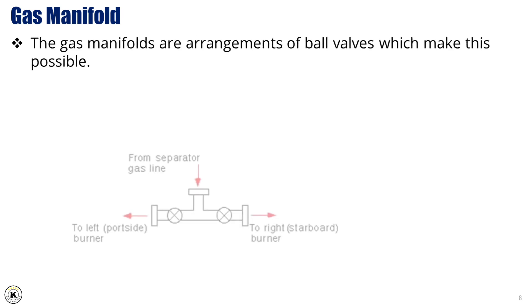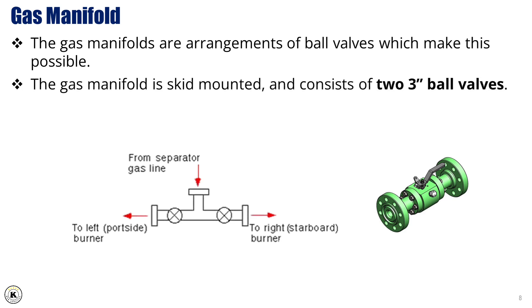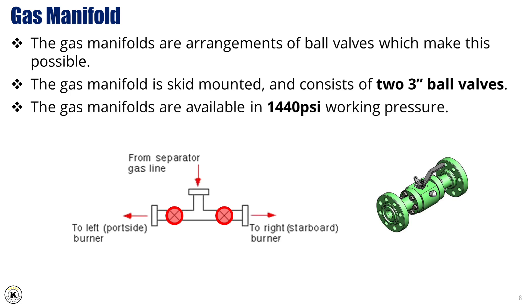The gas manifolds are arrangements of ball valves that make the diversion of gas flow possible. Each gas manifold is skid mounted for easy transportation and stability during operations, and consists of two three-inch ball valves. These manifolds are specifically designed to handle low pressure conditions downstream of the choke manifold, and are available with a working pressure rating of 1,440 psi, ensuring safe and reliable gas flow control throughout the well testing process.